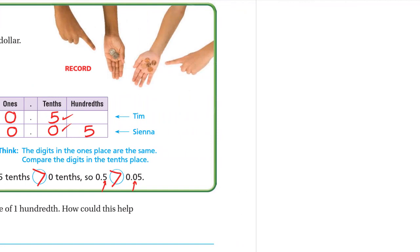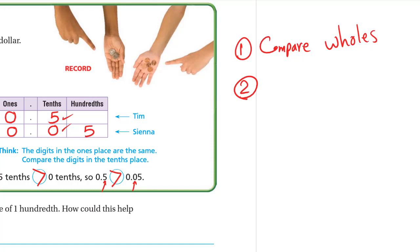To make it easier: first compare the ones. If the ones are the same — like both are zero — then go and compare the tenths. If the tenths are also equal, go and compare the hundredths.